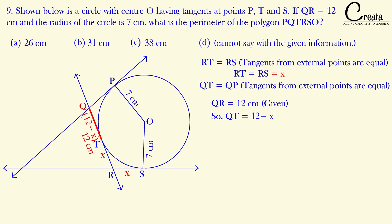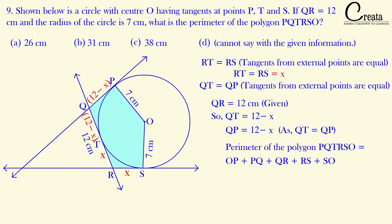Since QT and QP are equal by the tangents-from-external-point concept, QP will also equal 12 − x. The perimeter of the polygon equals OP + PQ + QR + RS + SO. Substituting: radius is 7, QR is 12, QP is (12 − x), and RS is x. The −x and +x cancel out, giving a perimeter of 38 centimeters.